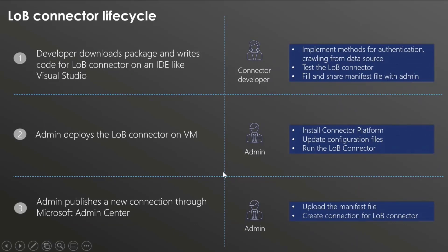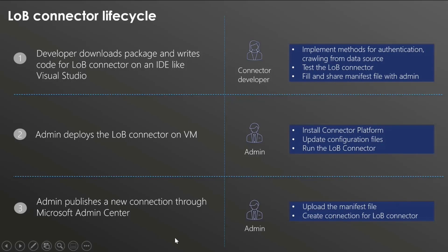Here's a quick overview of the development flow for a line-of-business connector. If you're using C#, you can download a template from the IDE that we already provide, which has a project structure. You open it up and write the code to read data from the data source. As an admin, you install the connector platform, update configuration files, and run your line-of-business connector code. Finally, you go to the Microsoft Admin Center — it's the same familiar flow as publishing an out-of-the-box connector.